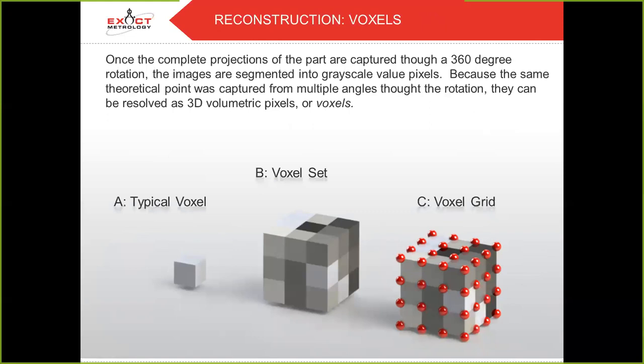And the voxels. Once the complete projections of the part are captured through a 360-degree rotation, the images are segmented into grayscale value pixels. Because the same theoretical point was captured from multiple angles throughout the rotation, they can be resolved as 3D volumetric pixels, or voxels. The 3D dataset consists of voxels — that is your second buzzword for the day after attenuation. A voxel is nothing more than a 3D pixel.